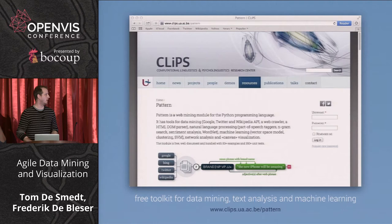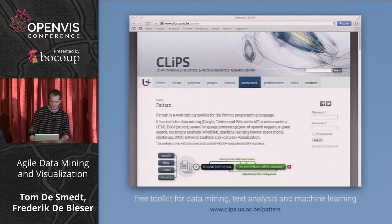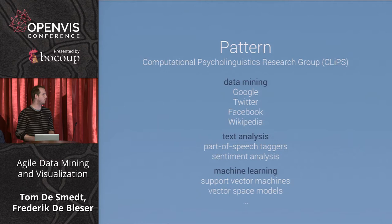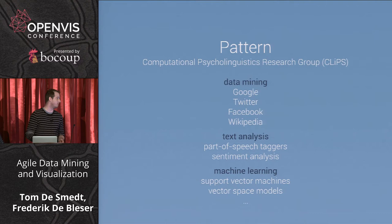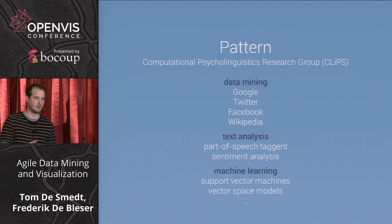Pattern also has functionality for text analysis — for example, part-of-speech tagging, which is a syntactical analysis giving you information about word types: is it a verb, a noun, a noun phrase, a collection of verbs? Or you can use it for sentiment analysis, finding out if an opinion is positive or negative. There are also machine learning tools: support vector machines, vector space models, and neural networks.